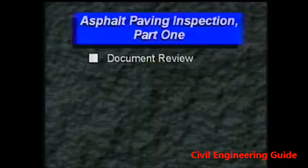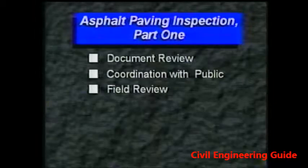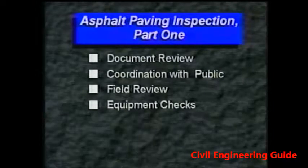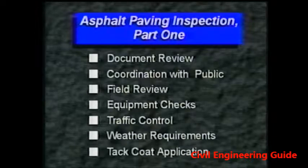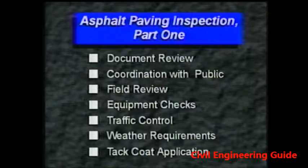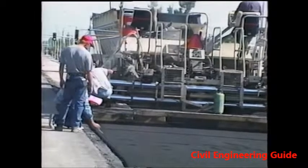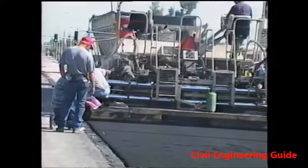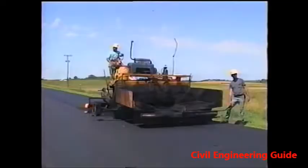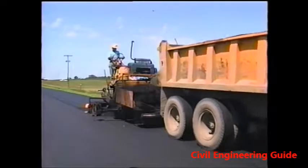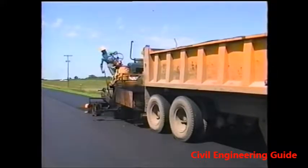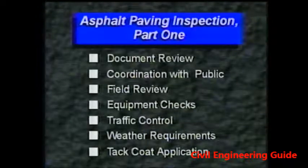Part one covers document review, coordination with the public, field review, equipment checks, traffic control, and weather requirements. Then we'll look at inspecting the tack coat application. Part two covers the paving operation itself. And part three shows some of the problems that can occur with mix quality, lay-down operations, and rolling. So let's get started.